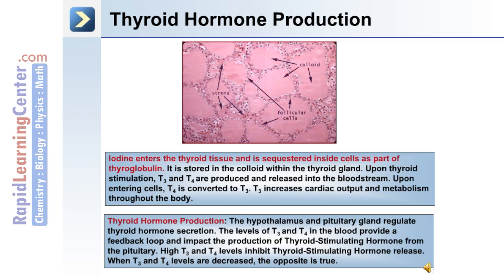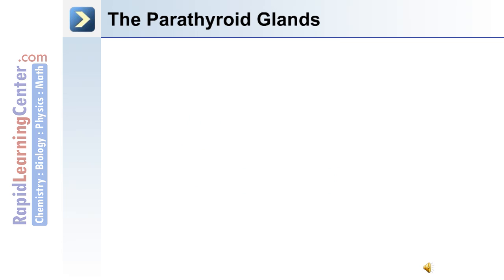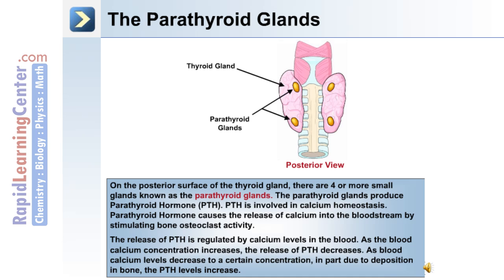As T3 and T4 levels decrease, the opposite is true and TSH release increases. Located on the posterior portion of the thyroid gland are the two pairs of parathyroid glands.